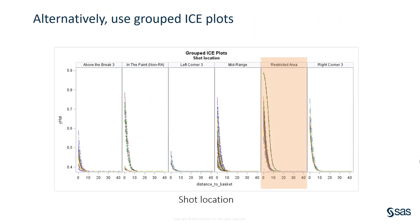Another way to manage a large number of ICE curves is to use grouped ICE plots. Here, ICE curves for distance to basket are grouped by another variable, shot location. The plot shows that shots taken in the restricted area include high, medium, and low probability shots — in other words, some shots taken in the restricted area are actually advantageous. This is a finding that is not apparent from the PD plot for shot location that we saw earlier. After segregating the ICE curves in this manner, you could drill even deeper to explore why some shots in the restricted area are even more successful than others.